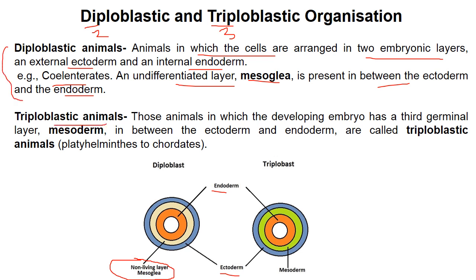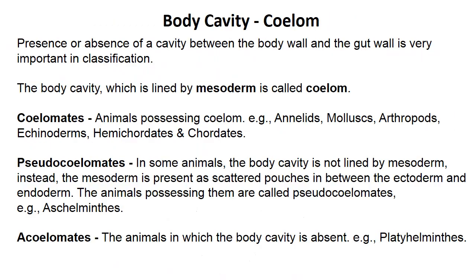Triploblastic organisms have three layers: ectoderm, endoderm, and mesoderm — the middle layer being mesoderm. From phylum Platyhelminthes to Chordata, they are all triploblastic organisms. Now let's talk about the body cavity, which is called the coelom. The coelom or body cavity is a very important characteristic for classifying different phyla of kingdom Animalia.